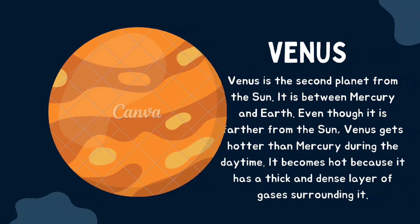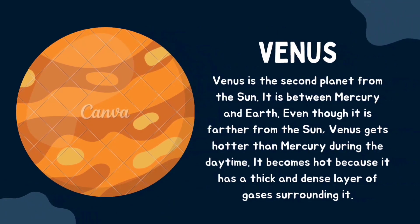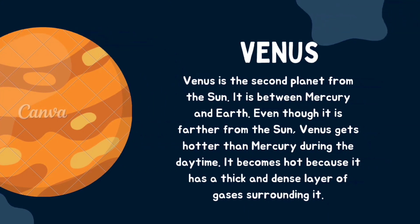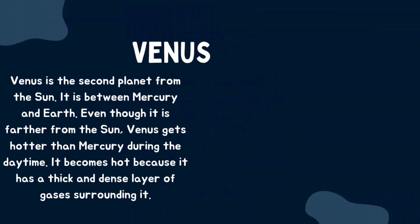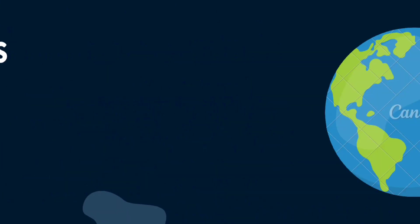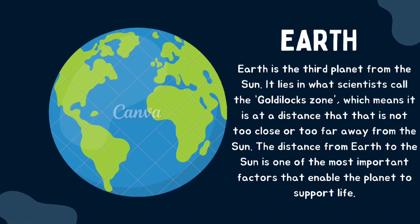Now we are going to talk about the second planet, Venus. Venus is the second planet from the sun, located between Mercury and Earth. Even though it is further from the sun, Venus gets hotter than Mercury. It becomes hot because it has a thick and dense layer of gases surrounding it, and because of this atmospheric layer, it is known as the hottest planet.